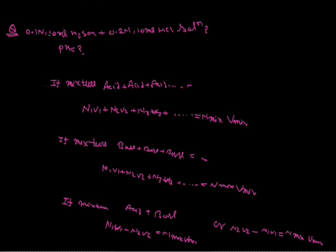First question: find the pH of a mixture of 0.1 normal 10 ml H2SO4 plus 0.2 normal 10 ml H2SO4. Both are acids, so we use the formula N1V1 plus N2V2 equals Nmix times Vmix.